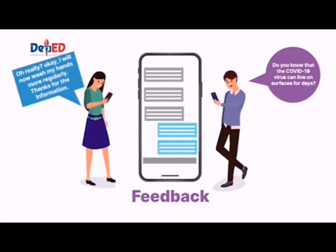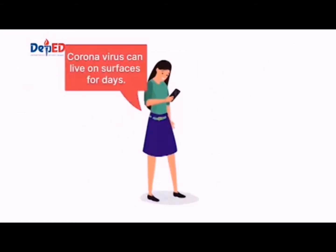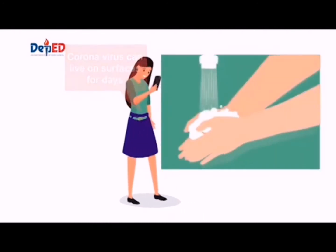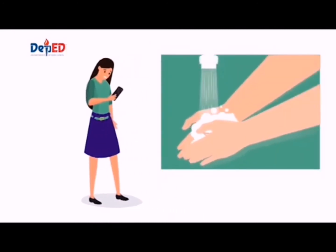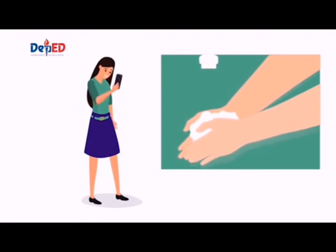For example, after reading information that the COVID-19 virus can live on surfaces for days, you did not give any comments or replies to the sender of the message, but it made you more conscious of the things you touch and made you practice hand washing more regularly. That is an indirect response.